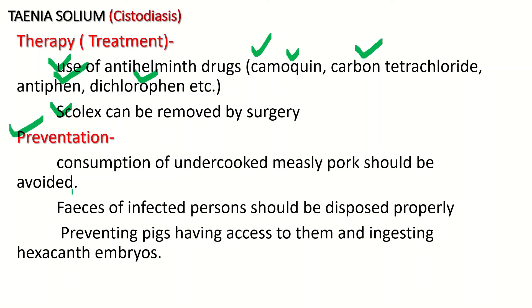There are also some preventive methods. Anyone should avoid the consumption of undercooked measly pork. Waste of infected persons should be properly disposed of, and pigs should be prevented from accessing this waste material to avoid entry of hexacanth embryos into their body. These are some simple preventive methods to control Cysticercosis and Taeniasis.